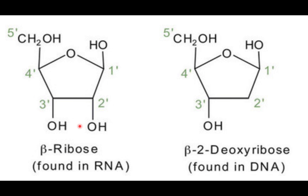We're looking at our ribose sugar and our deoxyribose sugar. The ribose tends to have hydroxyl groups on the first, second, third, and fifth carbons, while for the deoxyribose, on carbon two there's a removal of part of the hydroxyl group — a deoxy — so that's what the 2-deoxyribose refers to. When they form acids you're going to have a ribonucleic acid and the deoxyribose nucleic acid.